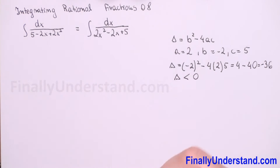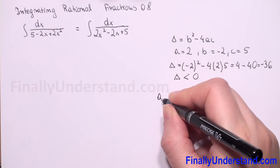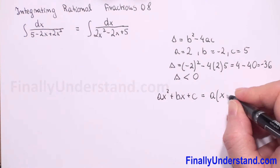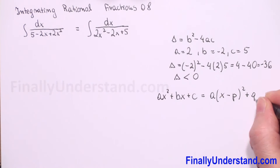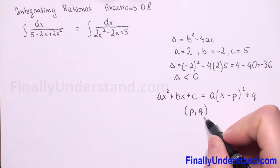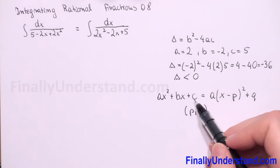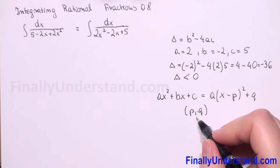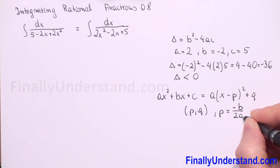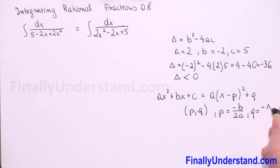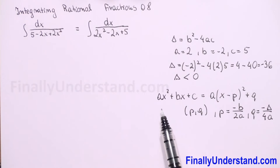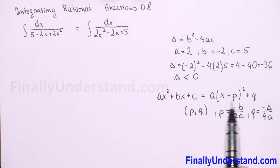What we can do is use the formula: when we have a quadratic function ax squared plus bx plus c, we can rewrite it in the form a times (x minus p) squared plus q. Here p and q are the coordinates of the vertex of the parabola, where p equals negative b over 2a and q equals negative delta over 4a, and delta is b squared minus 4ac.